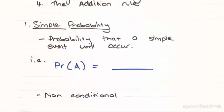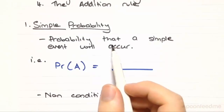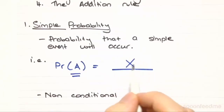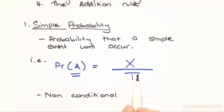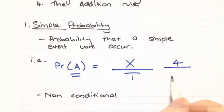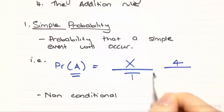Simple probability is essentially just the probability that a simple event will occur. A simple event — you could also think of that as a single event, a singular event, or an event that doesn't have any conditions attached to it. The probability of event A is x, the number of different ways that event A can occur, over t, the total number of different outcomes you could observe. For example, you may be measuring the probability of picking a red ball out of a bag. There are four red balls in the bag, so the probability of drawing red is 4, and there are 10 balls in total, so your total number of possible outcomes is 10.